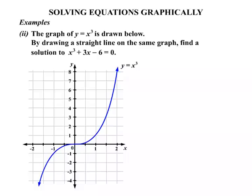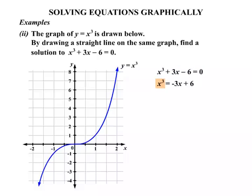Our second example involves a cubic curve. The graph of y equals x cubed is drawn below. We need to find a solution to x cubed plus 3x minus 6 equals 0. We isolate the x cubed, moving everything else to the other side and changing signs, giving x cubed equals minus 3x plus 6. So we consider the graph of y equals x cubed and the graph of y equals minus 3x plus 6. y equals x cubed is already graphed, so we graph y equals minus 3x plus 6 — a straight line.